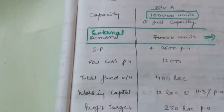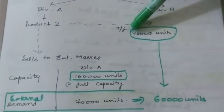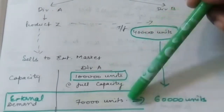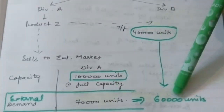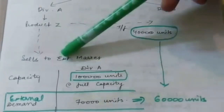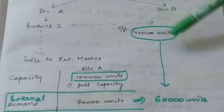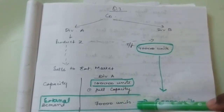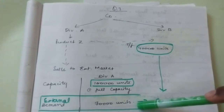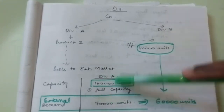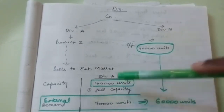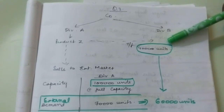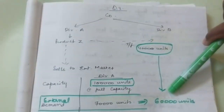We need to transfer 40,000 units from Division A to Division B, and the capacity is 1 lakh units, so 60,000 units will be sold in the external market. Now, looking at Division A, the spare capacity is 30,000 units because capacity is 1 lakh and external demand is 70,000. So 60,000 goes to the external market, and since 40,000 units are being transferred, Division A will lose contribution on 10,000 units, which will be charged to Division B as part of the transfer price.